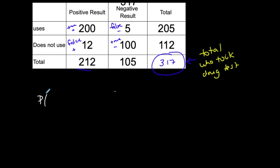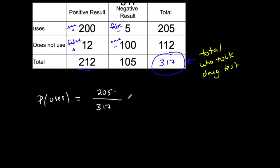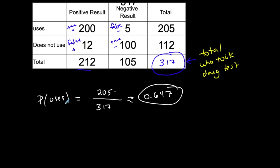Let's start with simple probability. Find the probability of somebody that uses. To calculate that, I take the total amount that used — 205 — and divide by the total number of people in the test, which is 317. That gives approximately 0.647, rounded to the nearest thousandth. In probability, we typically use three decimal places. This is the probability of randomly selecting one person at random and that person uses.